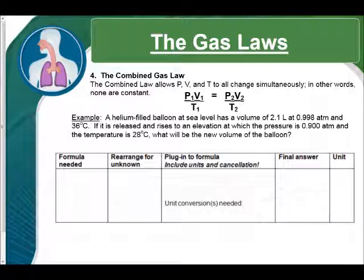This one is the one that uses all of our variables. So we're going to start with that one and then it'll help explain the other ones. So basically, the combined gas law lets us use pressure, volume, and temperature all at the same time. So none of them are constant.